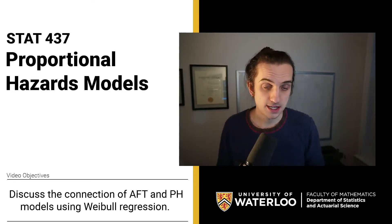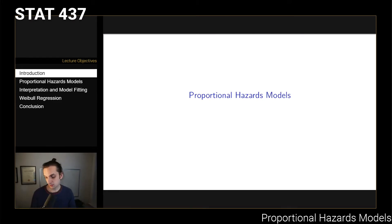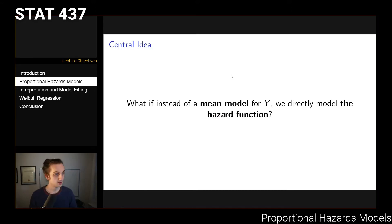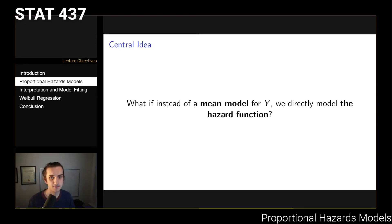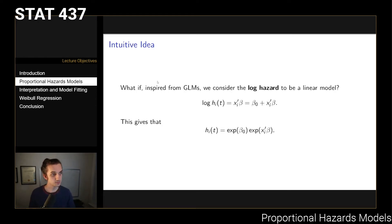As always, slides are posted on the course website. If you have any questions do let me know, but with that we can start talking about proportional hazards models. Instead of thinking about it as a model for Y, which is what we were doing with accelerated failure time models, the idea is: what if we model the hazard function directly? This is intuitive because the hazard function is so tightly integrated into the likelihood. We can write the likelihood as a product of the survivor function and the hazard, and the survivor function can be re-expressed in terms of the hazard by taking the exponential of its integral.